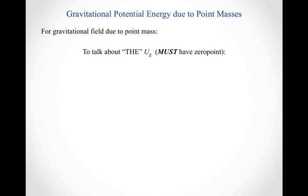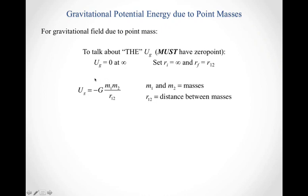As with any potential energy, what we mean is the gravitational potential energy relative to the point where it equals zero. We have to identify a zero point. Unlike in the constant gravitational field problem, here we don't have a choice: we set the gravitational potential energy to zero when the masses are infinitely far apart. This gives us an equation where the gravitational potential energy equals negative big G times the product of the masses over the distance between them.